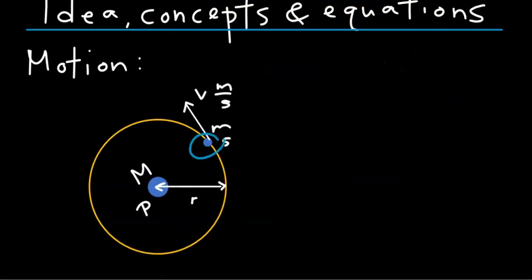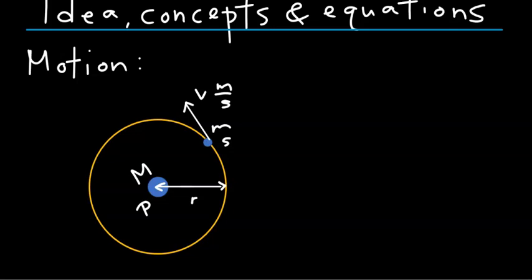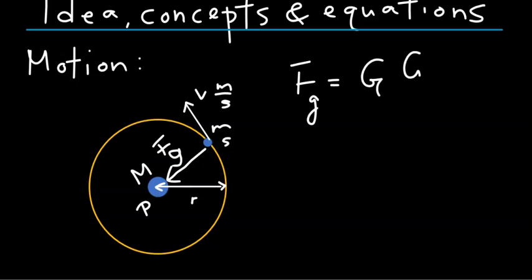Let's assume we have a satellite moving around a planet with mass M. The satellite's mass is m. It is moving in a circular orbit with radius r at uniform speed. This satellite will experience an attractive gravitational force towards the center of the planet. This force, F sub g, is given by Newton's law of gravitation as the universal gravitational constant times the product of the two masses over the square of the distance between the two bodies.